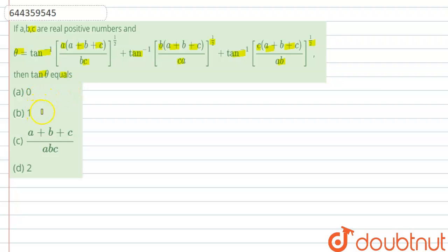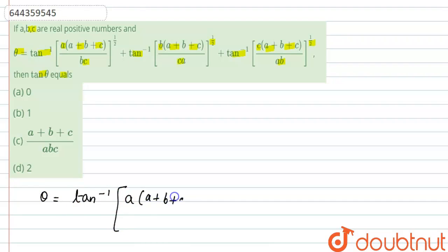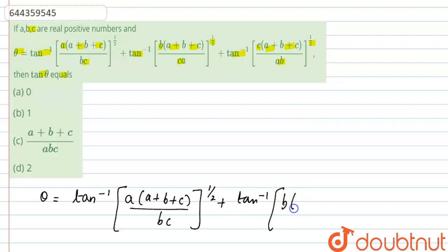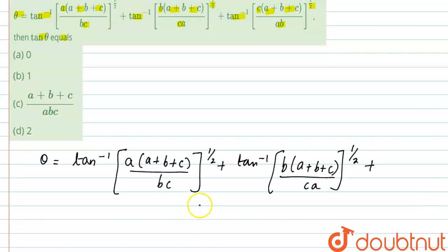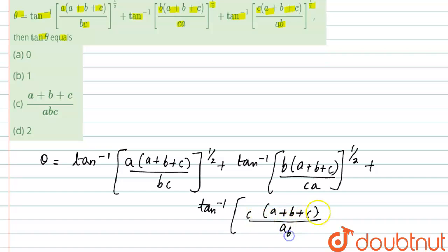We need to find tan theta. The options are: option A: 0, option B: 1, option C: (A + B + C) / ABC, option D: 2. It is given that theta equals tan inverse of A·(A+B+C)/BC raised to the power half, plus tan inverse of B·(A+B+C)/CA raised to the power half, plus tan inverse of C·(A+B+C)/AB raised to the power half.